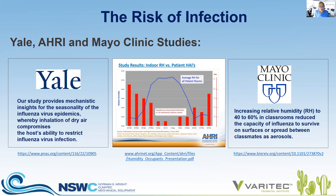Yale, AHRI, and Mayo Clinic have all done studies demonstrating that increasing humidity levels from 40 to 60 percent is a good practice for reducing the risk of infection spread in a building. A lot of research over and over again demonstrates that proper humidity control in the building is an excellent — if not perhaps one of the best — solutions for reducing the risk of infection.